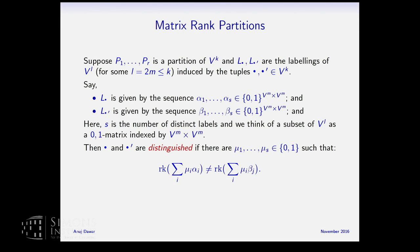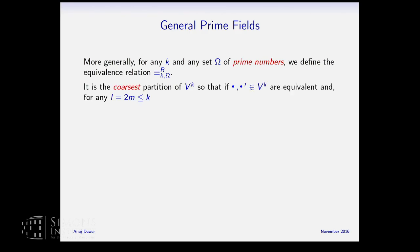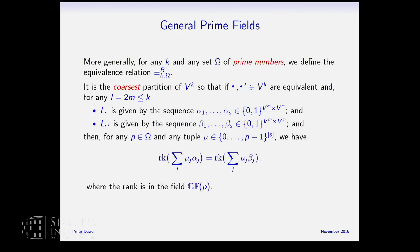The question is which rank function to use. In the logic we have rank operators for various prime fields, so we consider all of them. We fix k and any set of prime numbers omega and define an equivalence relation: two tuples are equivalent if for any prime p in omega and any linear combination, the ranks over GF(p) are equal. This captures equivalence in rank logic and refines Weisfeiler-Lehman equivalence.